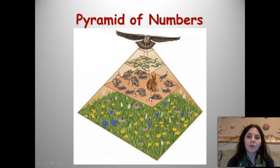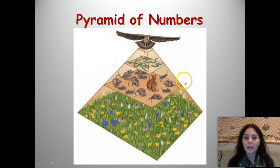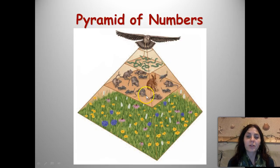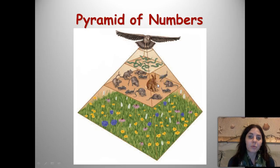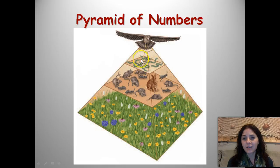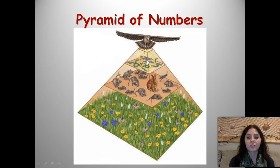We also have a pyramid of numbers. The pyramid of numbers shows how many of each organism has to be eaten by the top organism in order to survive. So all of these flowers will only support these herbivores — maybe one rabbit, a couple of mice, and some insects. All of these primary consumers will only support a few secondary consumers, which will support one tertiary consumer.